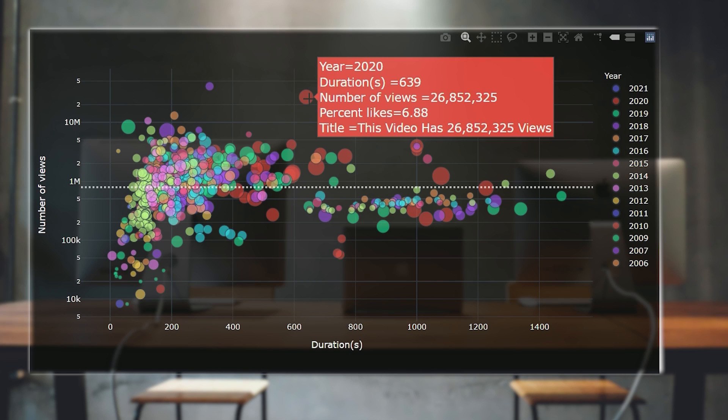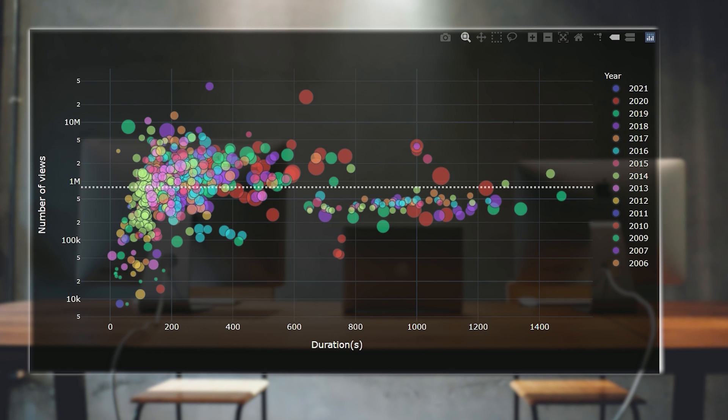Marker size indicates percentage likes. The bigger the marker, the greater the percentage likes, and the color is the year the video was uploaded. The dotted line is really important. It denotes the value of 790,463, which is the median value of views on the channel. 50% of videos have received more than this, and 50% fewer.